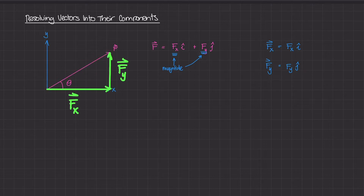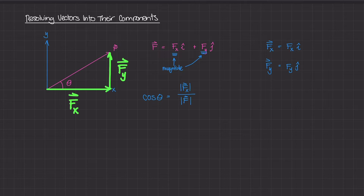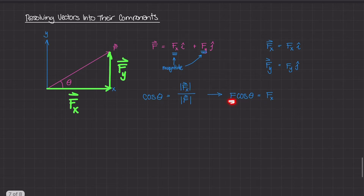We can use cosine and sine to figure out the magnitudes of the sides of the triangle, given that we know the hypotenuse. To figure out Fx, cosine of theta equals adjacent over hypotenuse — so it's the magnitude of Fx divided by the magnitude of F. Multiplying both sides by F, we get: the magnitude of Fx equals F times cosine theta.